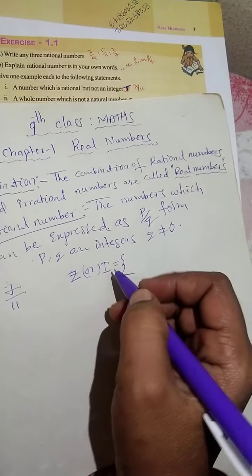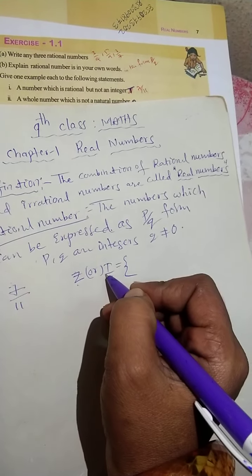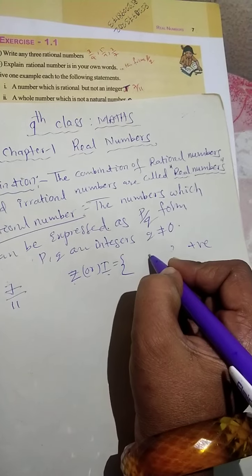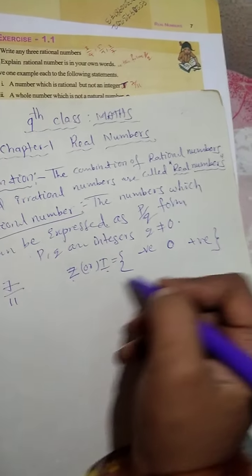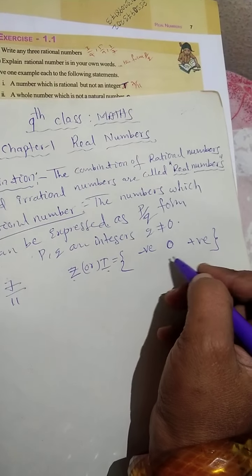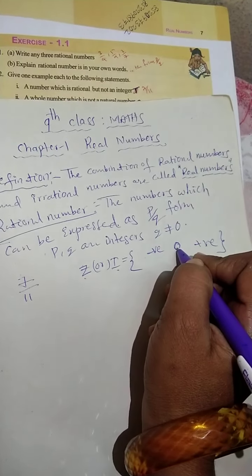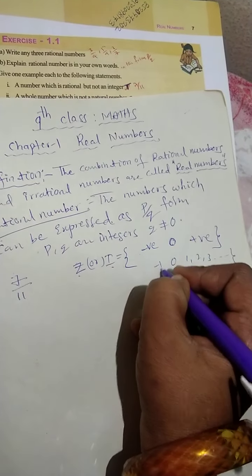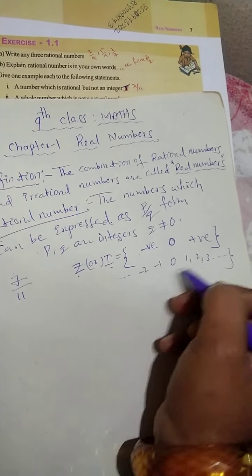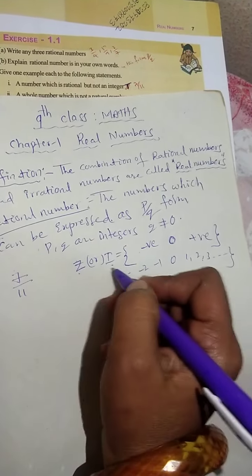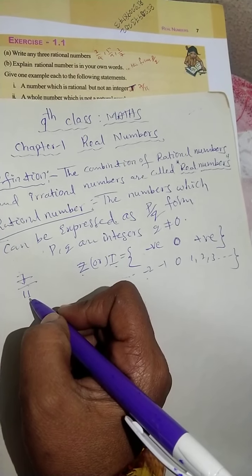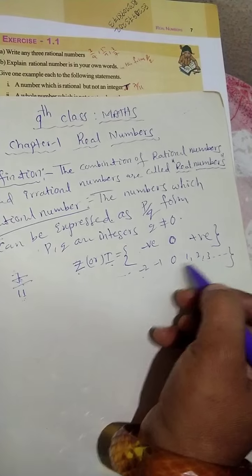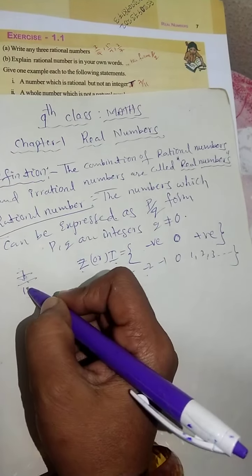Why is 7 by 11 not an integer? The definition of integers: integers are represented by the set Z or I, and include positive numbers, negative numbers, and zero. 7 by 11 is a rational number but not an integer because no p by q form number exists in the integers set, so it is not an integer but it is a rational number.